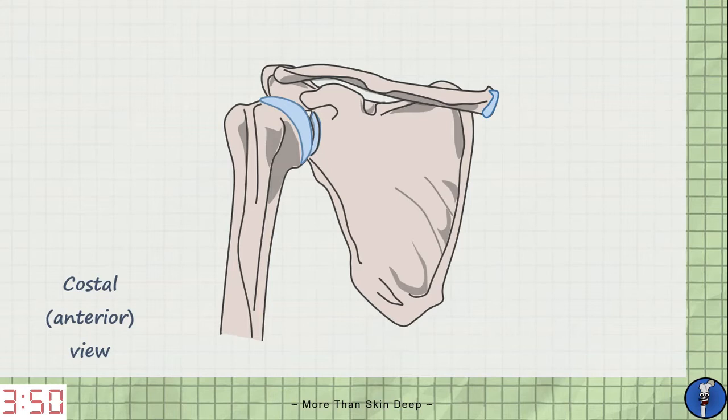The first bit of help comes from a fibrocartilaginous ring known as the glenoid labrum. This helps to deepen the shoulder joint but of course this still won't cut it. To properly hold the shoulder in place we need eight ligaments and four muscles.